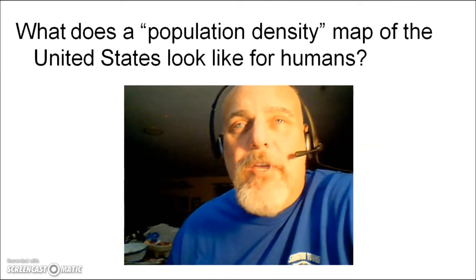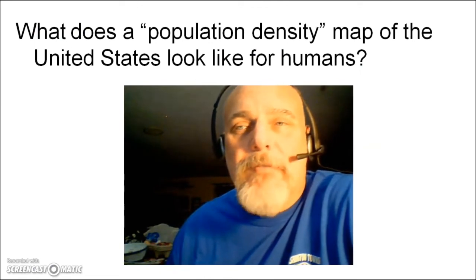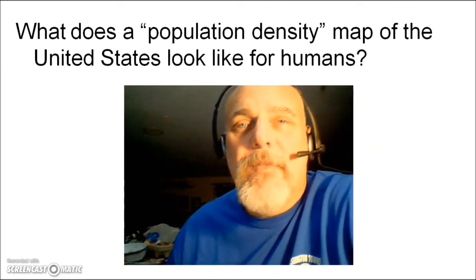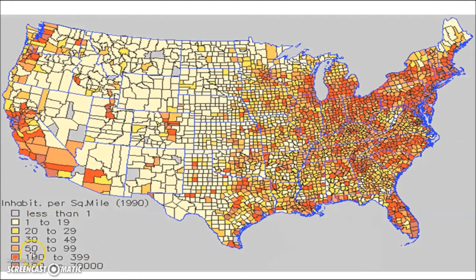What about for humans? Let's take a look at a population density map of the United States. If you look at the legend, you can see this is measured in people per square mile. In the grayish colored area, you're going to find less than one person per square mile — very desolate. You can see areas all the way up to 400 to 70,000 people per square mile in areas out here.